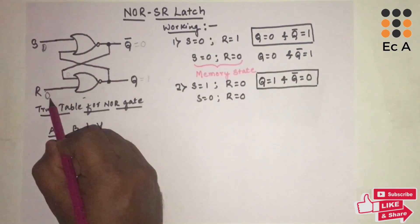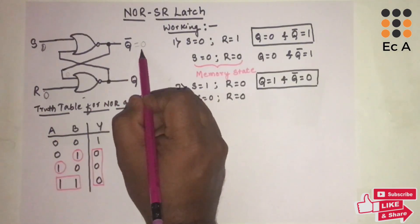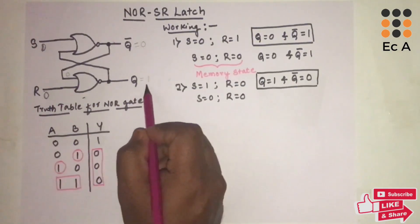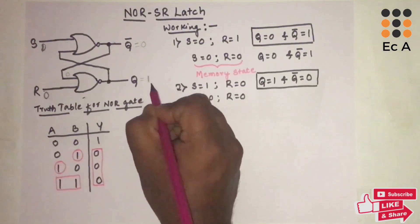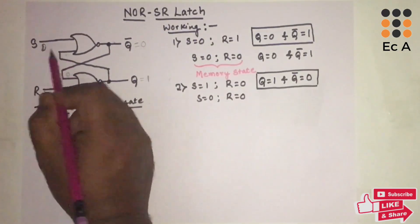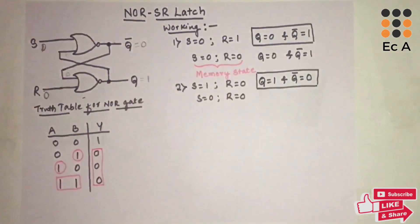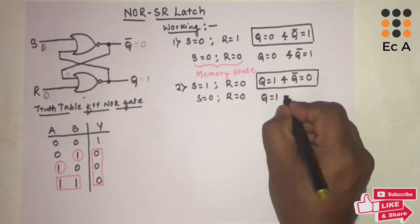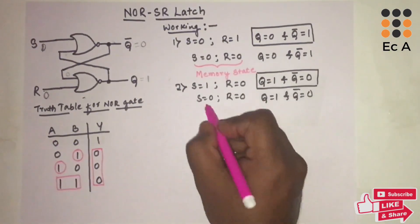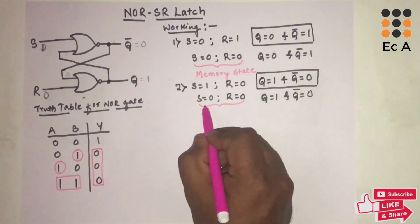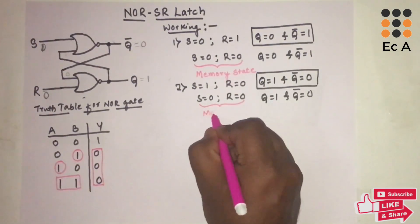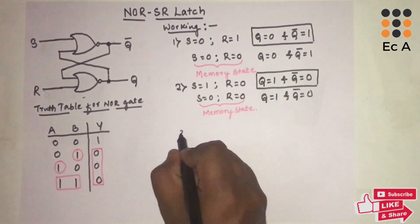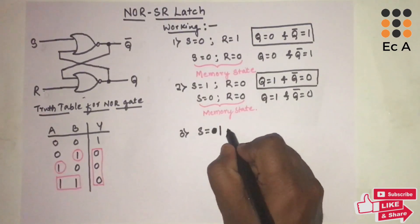Now let us take S=0 and R=0. The previous output Q-bar was zero, so with inputs 0-0 the output is one, meaning Q=1. This one feeds back, giving 1-0 at the next gate, so Q-bar=0. We get the same state: Q=1 and Q-bar=0. That is why we call this state — where S=0 and R=0 — the memory state.